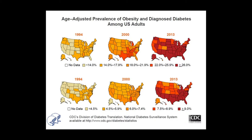This CDC chart shows the growth of obesity and diabetes from 1994 to 2013. Diabetes rates are well above nine percent, with some estimates at 14–16 percent or higher. The data is from 2013, so updated figures are likely even higher.